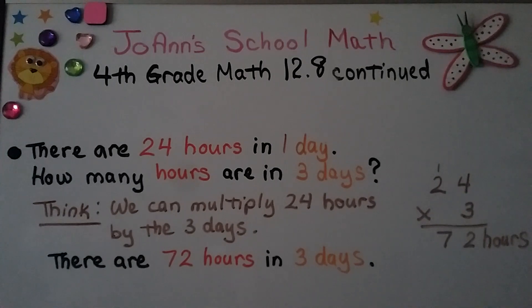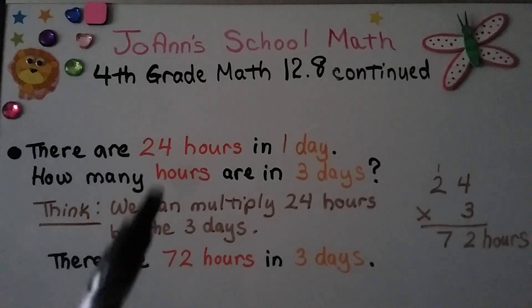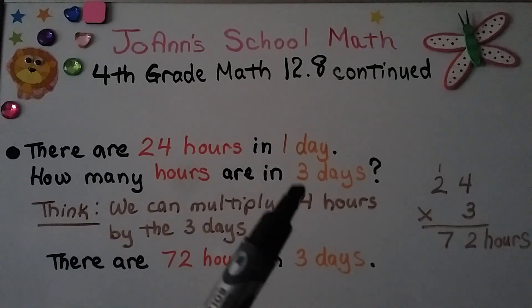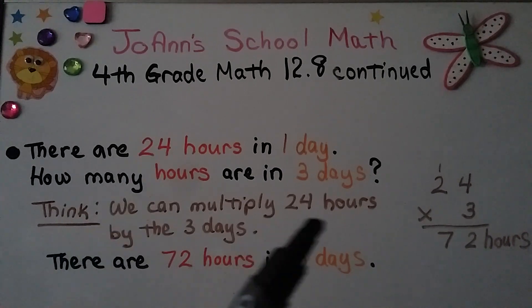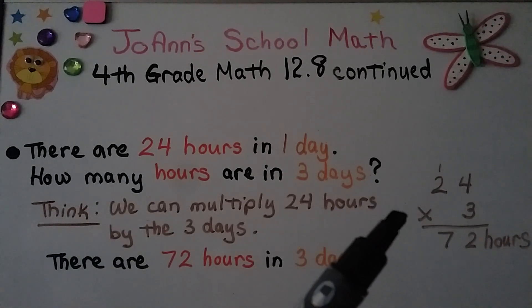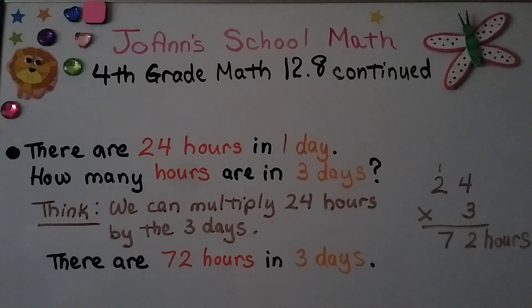There are 24 hours in 1 day. So how many hours are in 3 days? Let me think. We can multiply 24 hours by the 3 days. If 24 hours is 1 day, and we're looking for 3 days, we would have 3 24s. We would do 24 times 3. So there are 72 hours in 3 days.